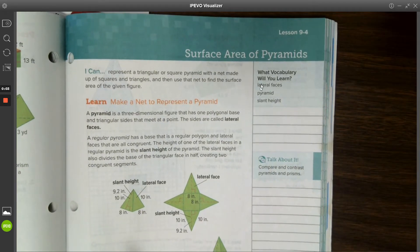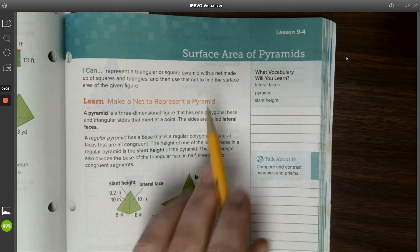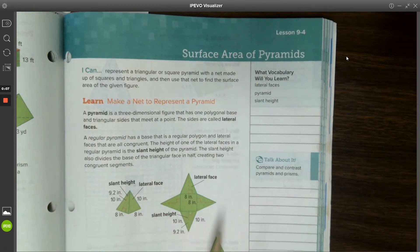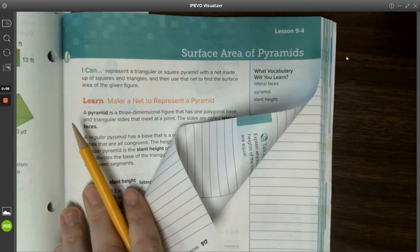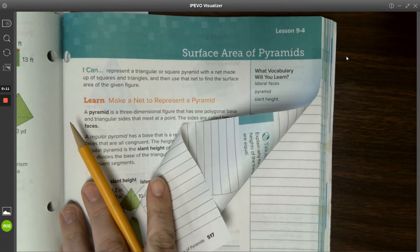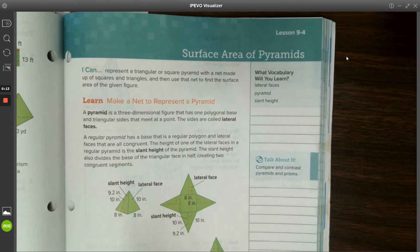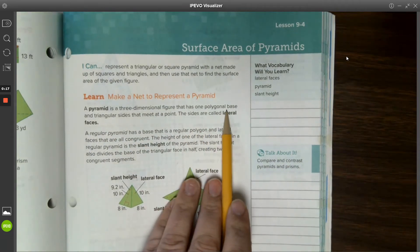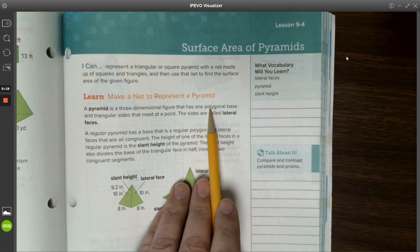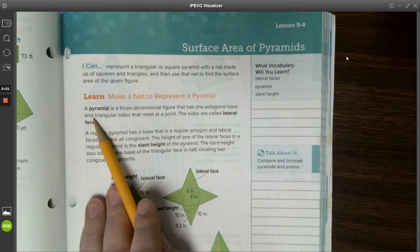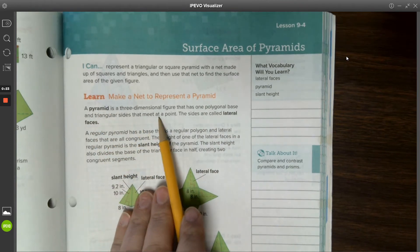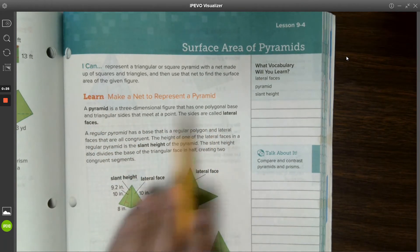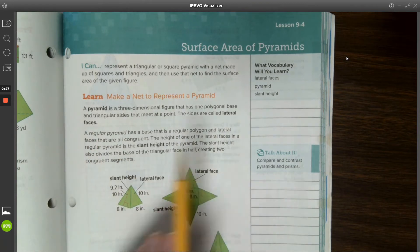Hi everybody, today we are talking about lesson 9-4, and this is surface area of pyramids. I'm on page 517 in your workbook. To begin with, a pyramid is a three-dimensional figure that has one polygon base and triangular sides that meet at a point. The sides are called lateral faces, so that's what all the triangles are, the lateral faces.